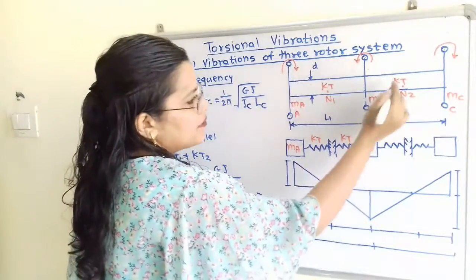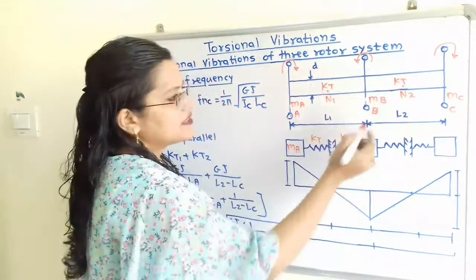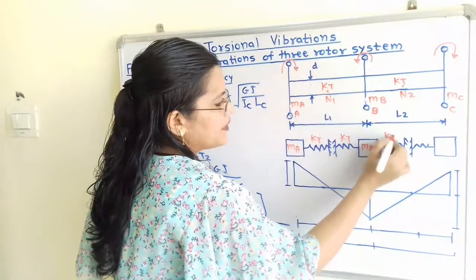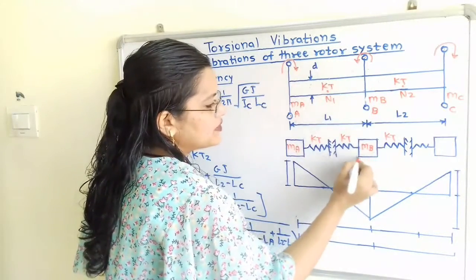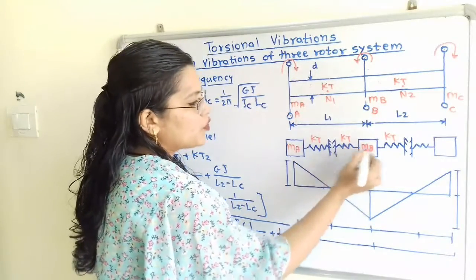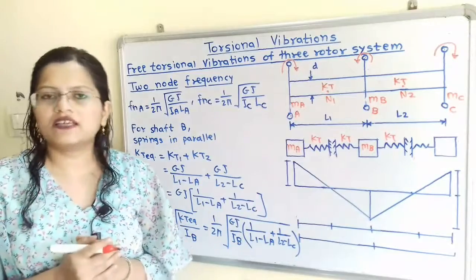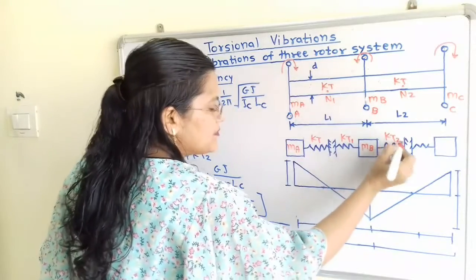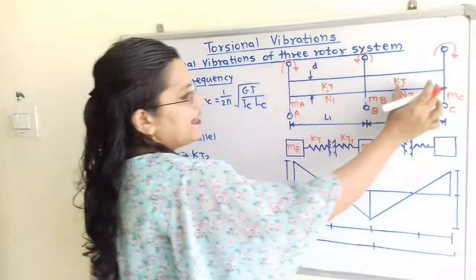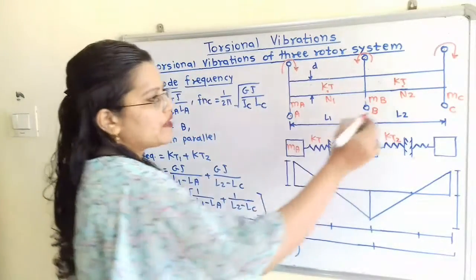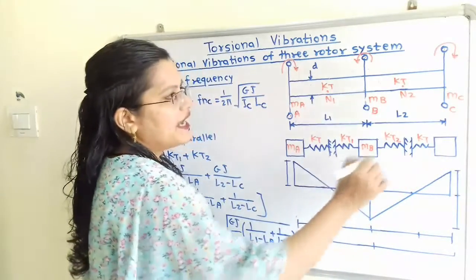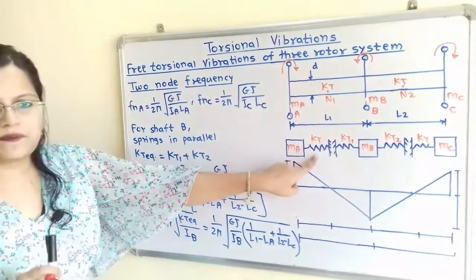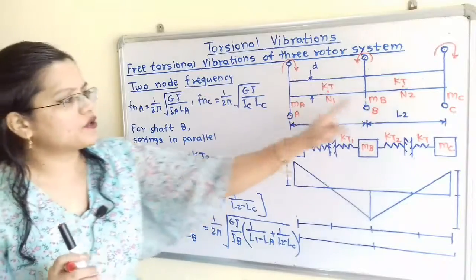On the left-hand side of N2, there is a portion of shaft with spring stiffness KT and the rotor mass MB. Observing both sides of mass MB, there are two springs which are in parallel, so we call their stiffnesses KT1 and KT2. On the right-hand side of N2, there is also a shaft with spring stiffness KT and the mass of rotor C as MC. This gives us the equivalent spring-mass system for the three rotor system.